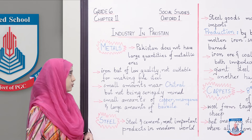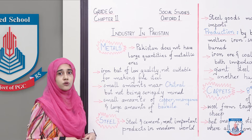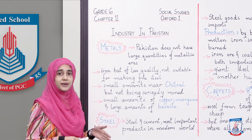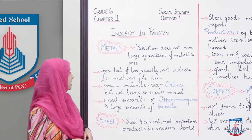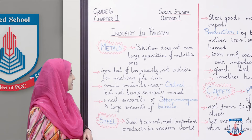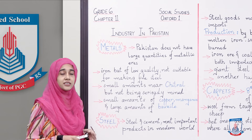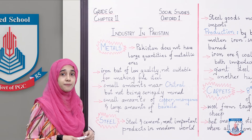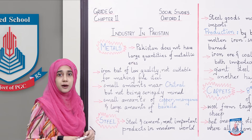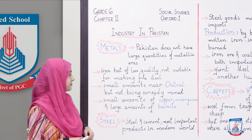Metals: Pakistan does not have large quantities of metallic ores. Pakistan mein metallic ores ki koi large quantity maujood nahi hai, jiski wajah se hamen metallic ores ki ek badi tadaad doosre mulkon se import karni padti hai. Iron ore hai lekin coal ki tarah it is not of good quality, aur isi wajah se hamen woh import karna padta hai. Steel industry hamare mulk ki ek badi industry hai lekin iron ore accha na hone ki wajah se hamen ek badi tadaad mein iron ore import karna padta hai.